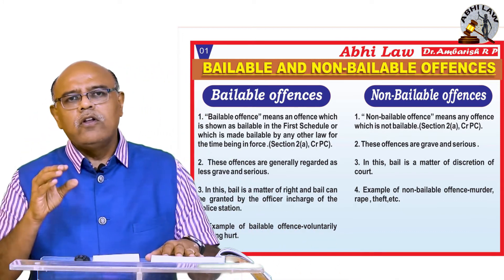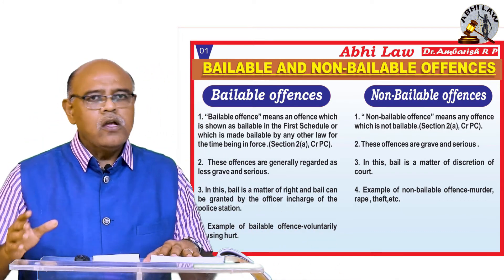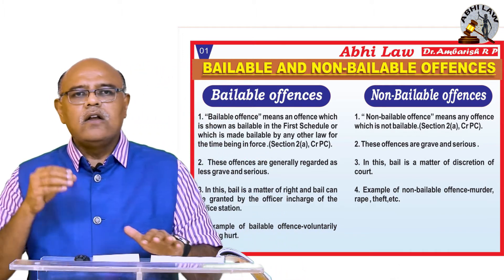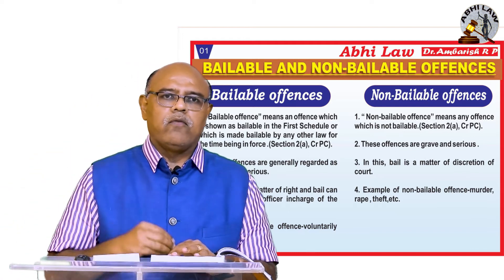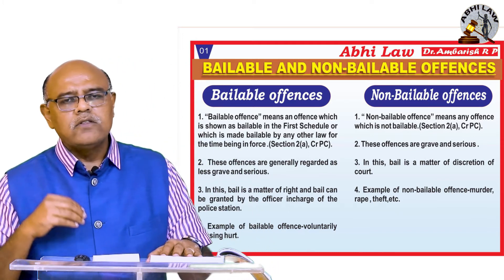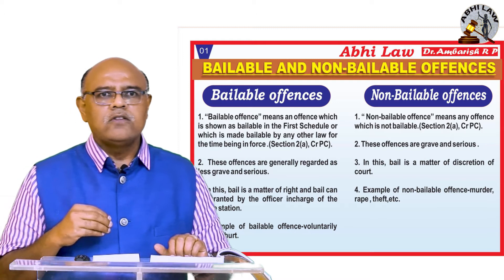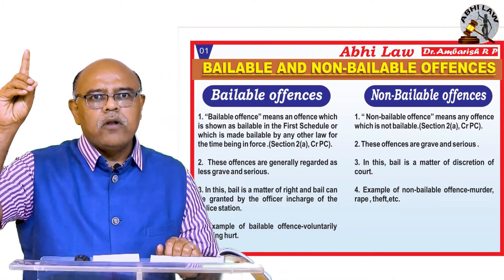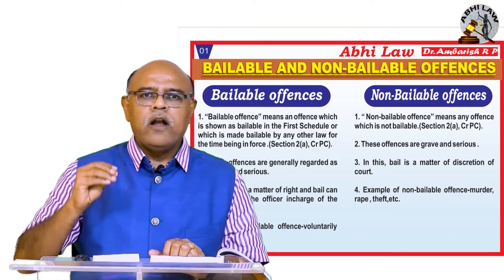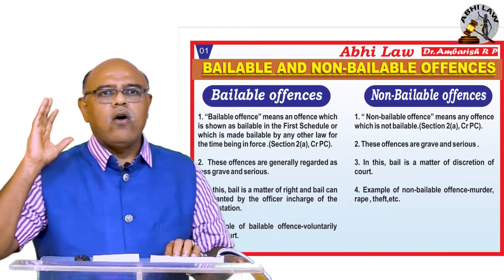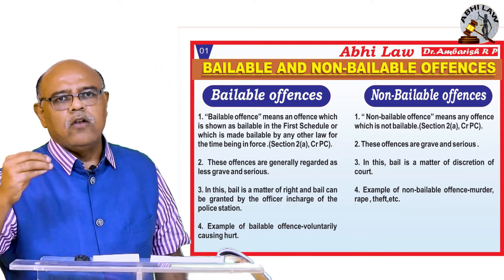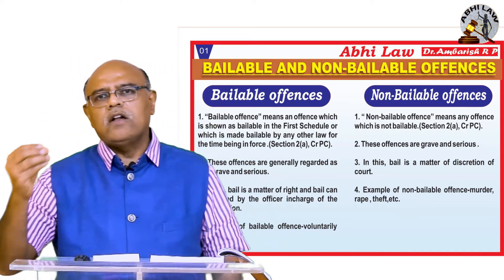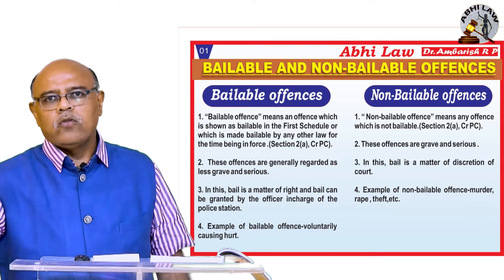As we know, it starts with 'B', so Section 2, clause (a) deals with the definition of bailable offense and non-bailable offense. What is a bailable offense? A bailable offense means an offense which is shown as bailable in the First Schedule, Column Number 5, or which is made bailable by any other law for the time being in force. This is the definition of bailable offense.